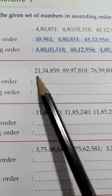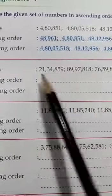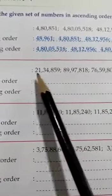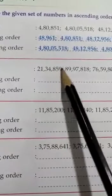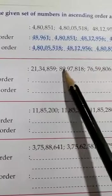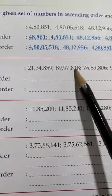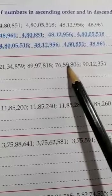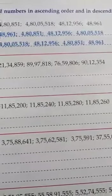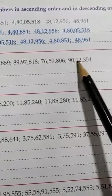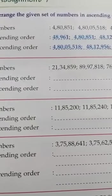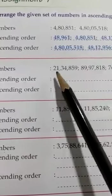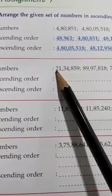Let's see how many digits are there. The first number has 7 digits, the second has 7, the third has 7, and the fourth also has 7. So all four numbers are 7-digit numbers. The next step: start from the first digit on the left.